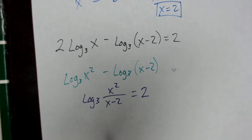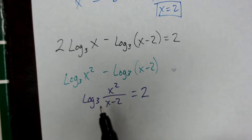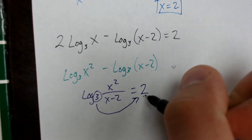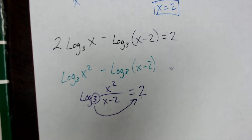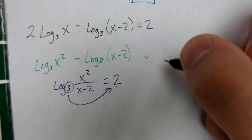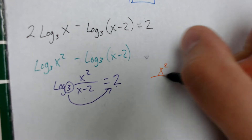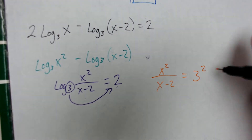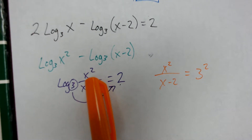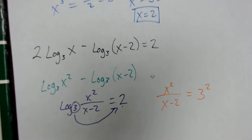On equations where there's a log on one side and no log on the other, we take the base and raise it to the exponent of the whole number on the other side, then remove the logarithm. This rewrites our equation as x squared over (x minus 2) equals 3 squared. Those types of problems used to be simpler, but now we've got more complex numbers in our logarithm.